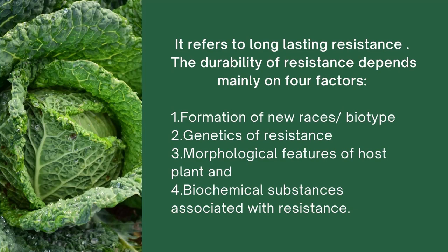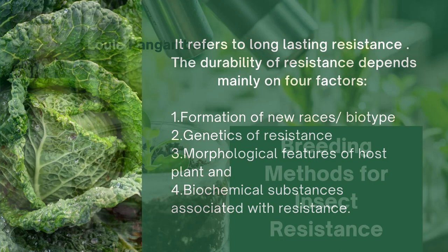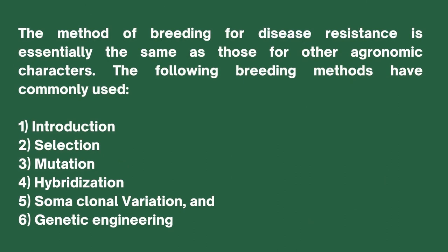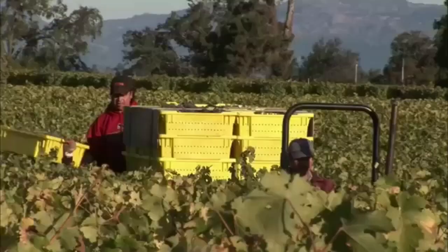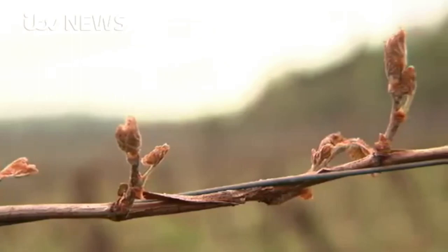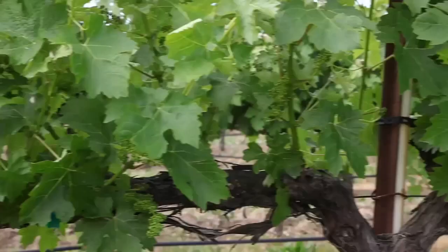Breeding methods for insect resistance — the methods are essentially the same as those for other agronomic characters. The following methods are commonly used: introduction, selection, mutation, hybridization, somaclonal variation, and genetic engineering. Introduction is an easy and rapid method of developing disease-resistant varieties. The resistant variety may be introduced and, after testing, released in a disease-prone area. For example, in 1860, the grape crop in France was completely destroyed by the attack of Phylloxera vitifoliae; introduction of resistant root stocks from the USA saved the grape crop from extinction.